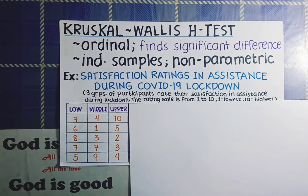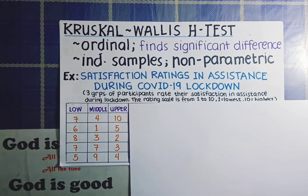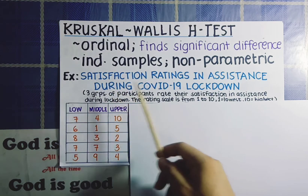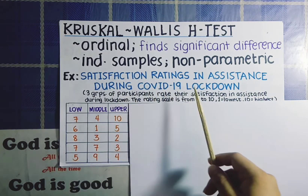Also, because our data here are not normally distributed, the most appropriate level of measurement that we should use here should be under ordinal scale. To give you an example on how the Kruskal-Wallis H Test works, let's have here an example research entitled 'Satisfaction Ratings in Assistance During COVID-19 Lockdown.'